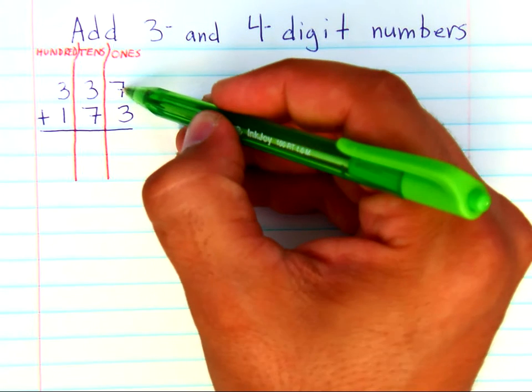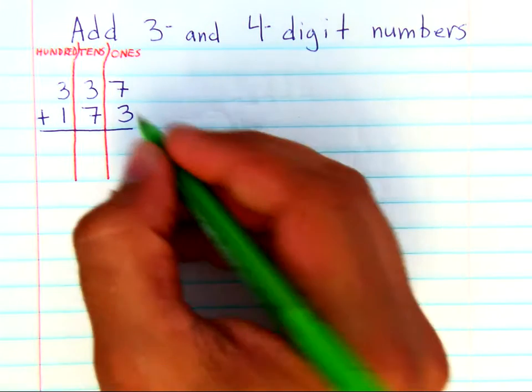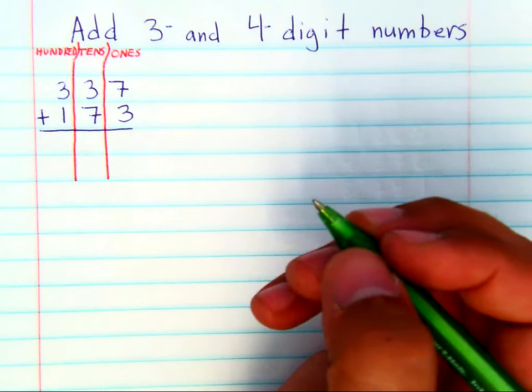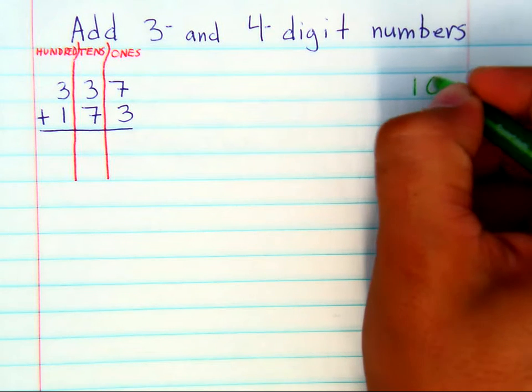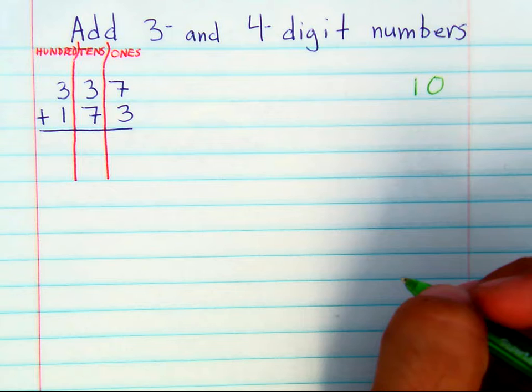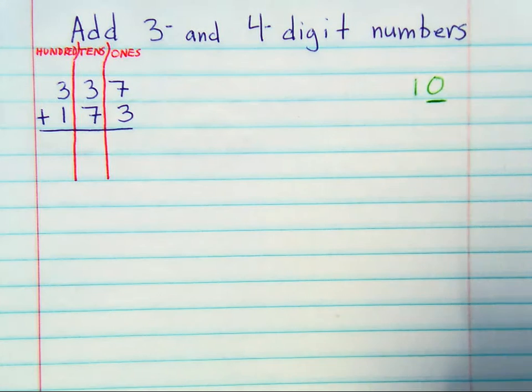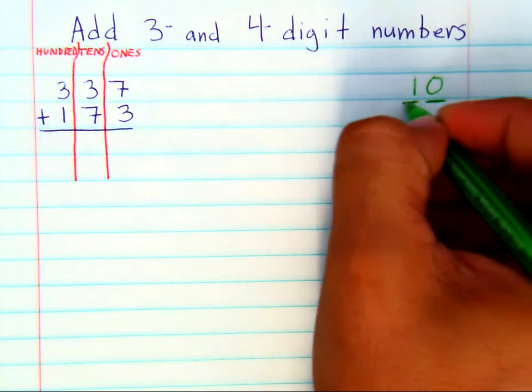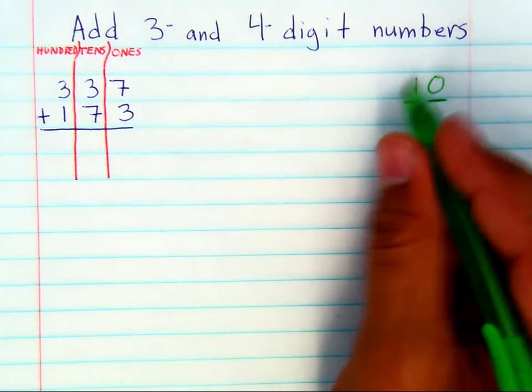Now when you add seven and three, we get the answer is ten. I reminded my students today that ten is not a single place value. Ten is actually ones and tens. I reminded them that we've been talking about place value.